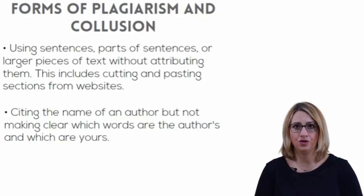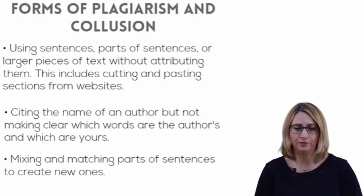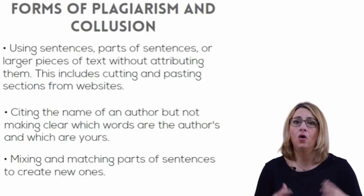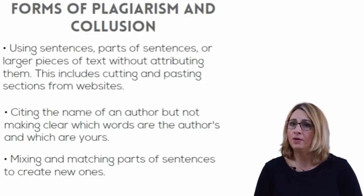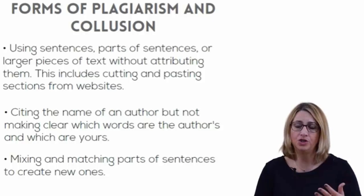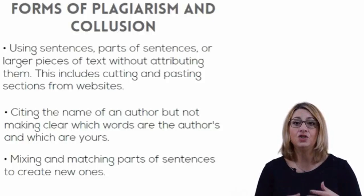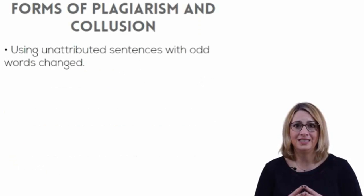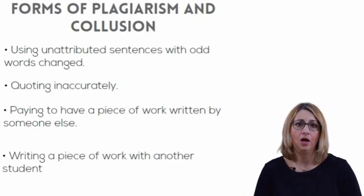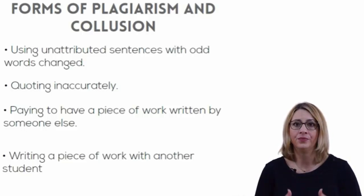Forms of plagiarism and collusion, all of which are unacceptable, include: using sentences, parts of sentences or larger pieces of text without attributing them — this includes cutting and pasting sections from websites; citing the name of an author but not making clear which words are the author's and which are yours; mixing and matching parts of sentences to create new ones — if you use recognisable phrases that are not your own, then you are plagiarising; using unattributed sentences with odd words changed; and quoting inaccurately — even if you cite the author and source and put the quote in inverted commas, if you do not reproduce a quote faithfully, then you have plagiarised.